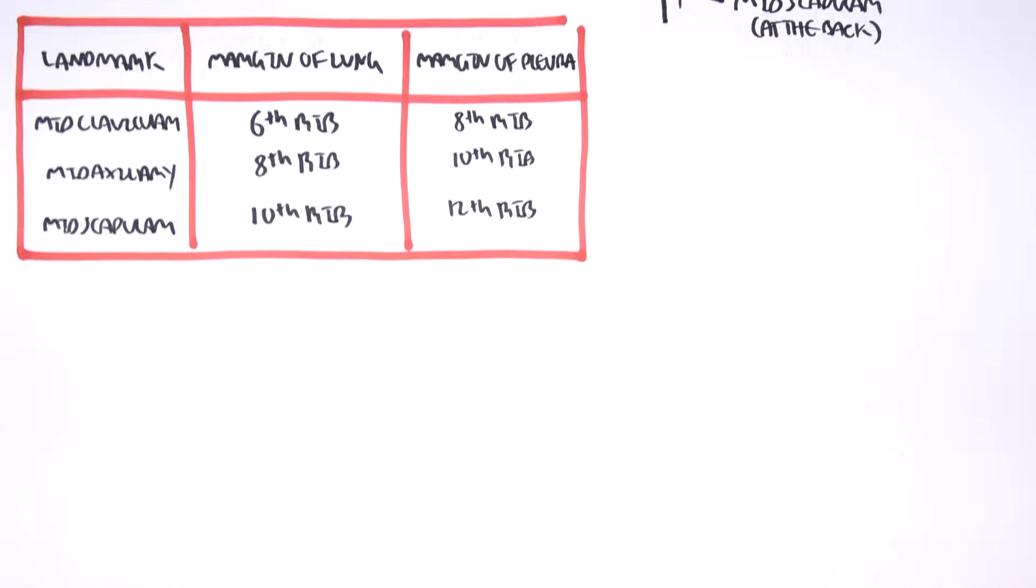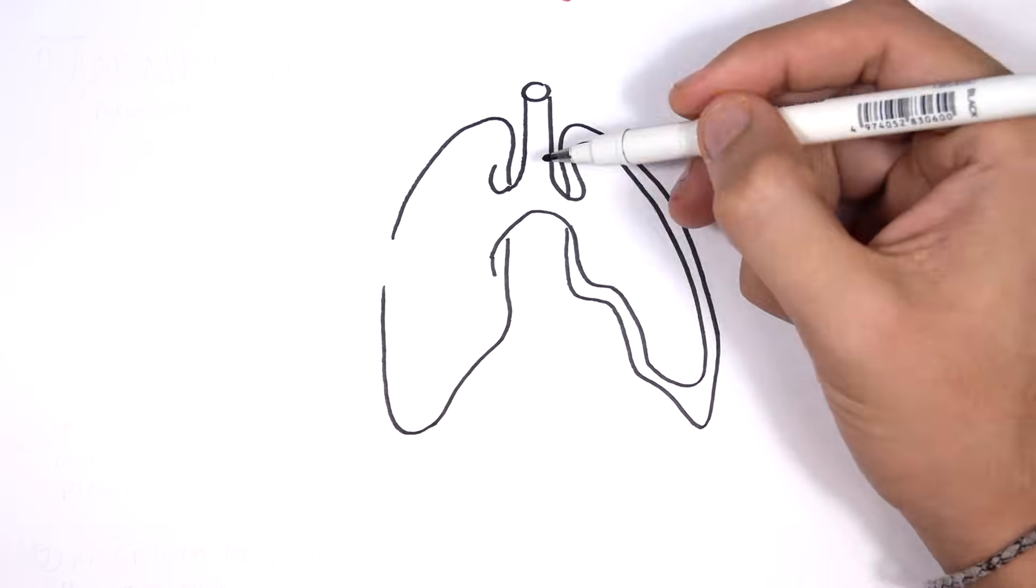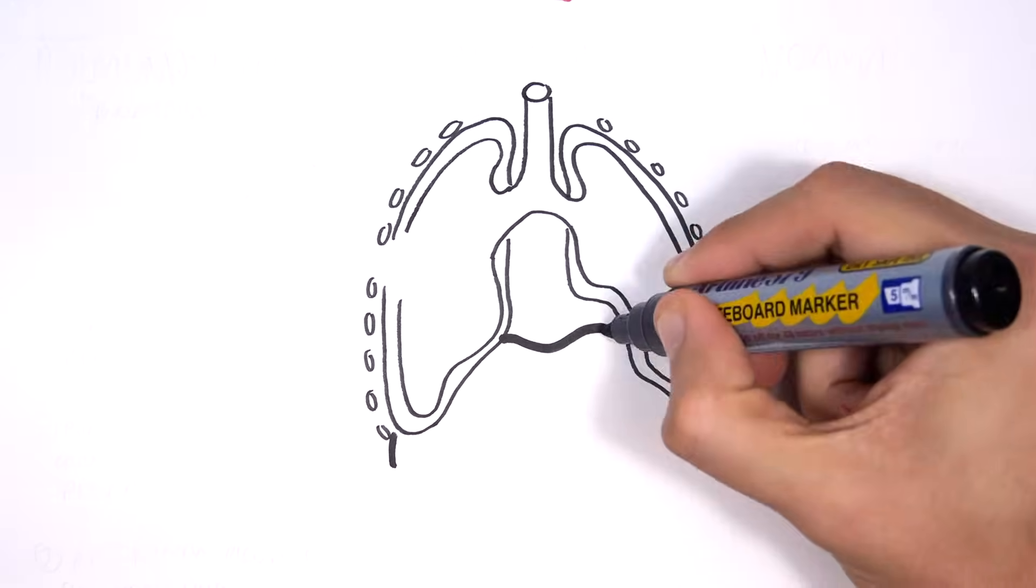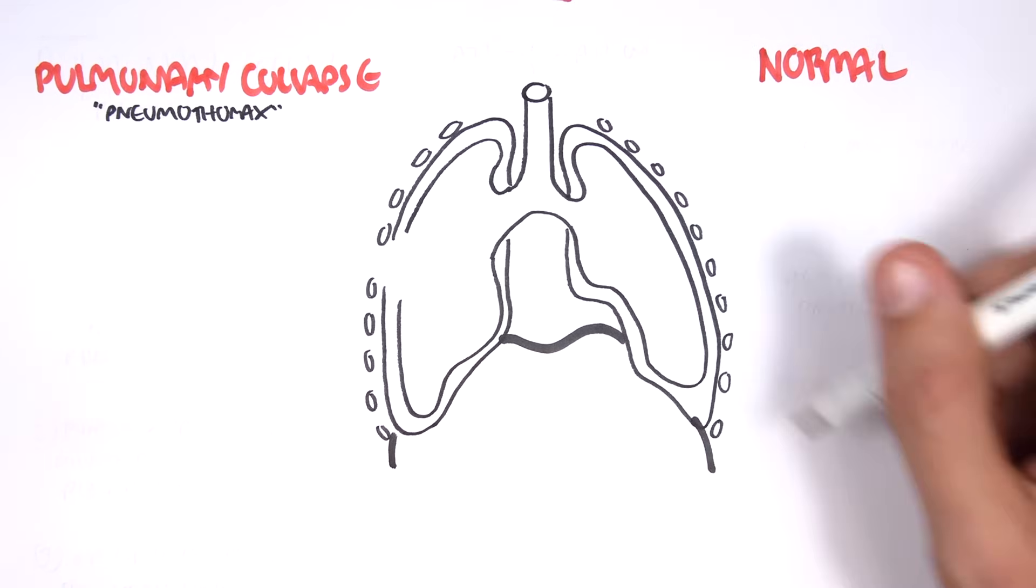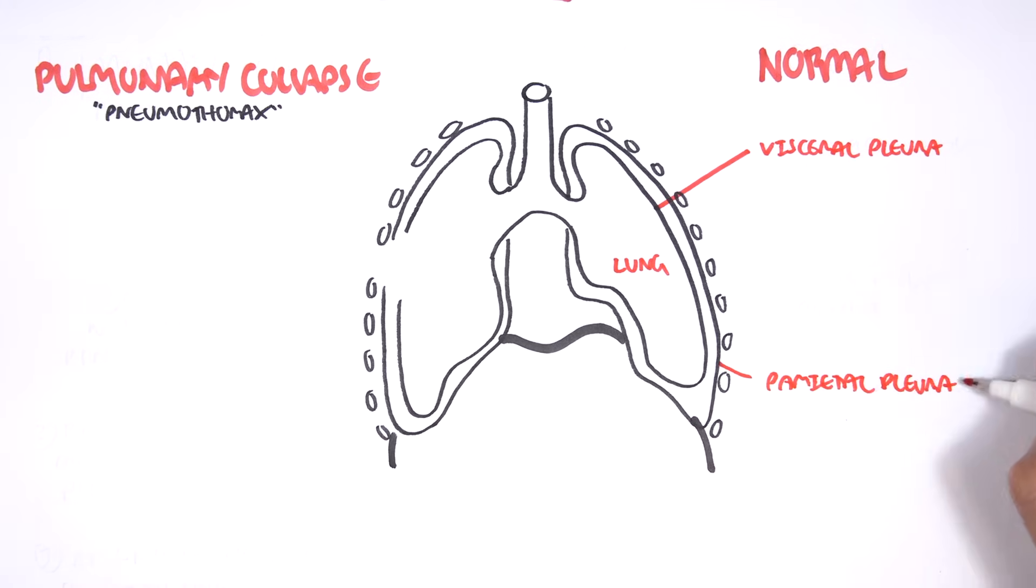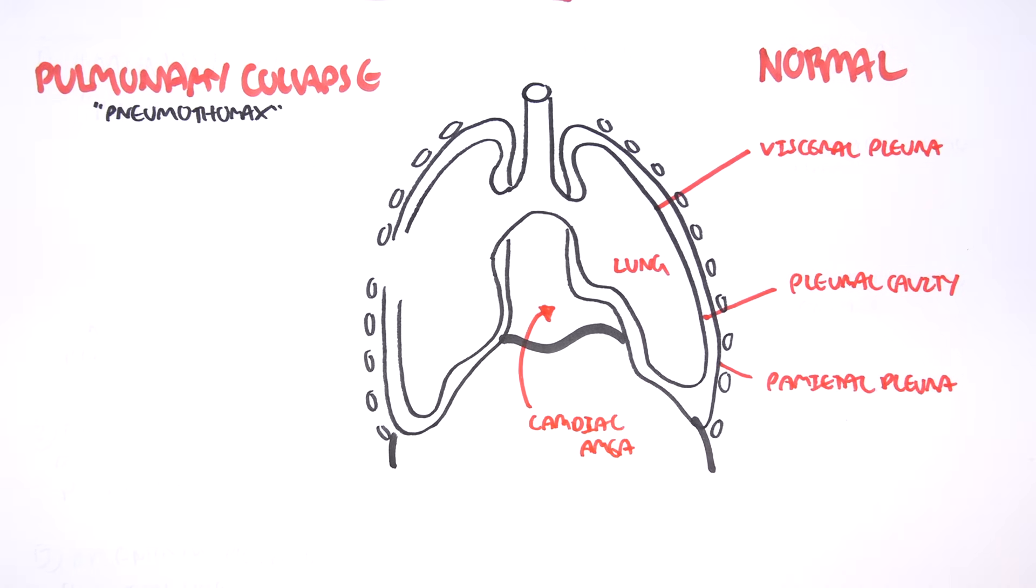Now let's look at what problems can occur in the thoracic cavity. Let's look at a pulmonary collapse, a result of a pneumothorax. A collapsed lung is also referred to as atelectasis. So normally here is our lung. Surrounding our lung is the visceral pleura, then our parietal pleura. In between the visceral and parietal pleura, we have the pleural cavity, which helps lubricate the layers and keep them stuck together. And here is the cardiac area where the heart sits.